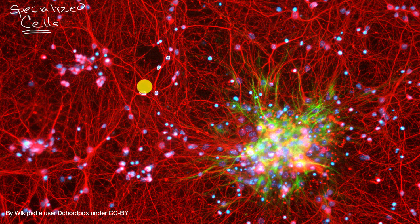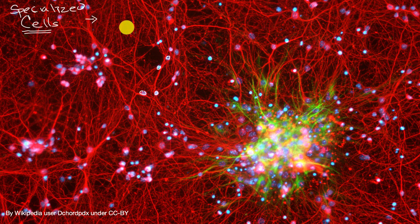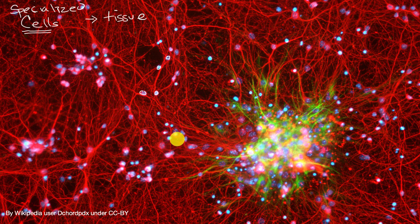But if we zoom out a little bit, and you take a bunch of these specialized cells working together, or at least near each other, you have tissue. This is a zoomed-in view of neural tissue, in particular of brain tissue.